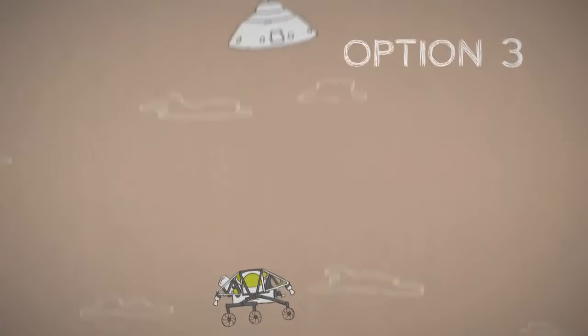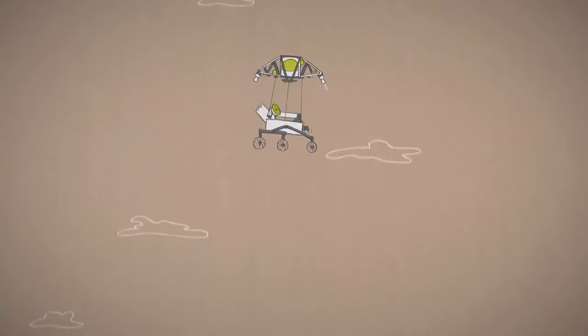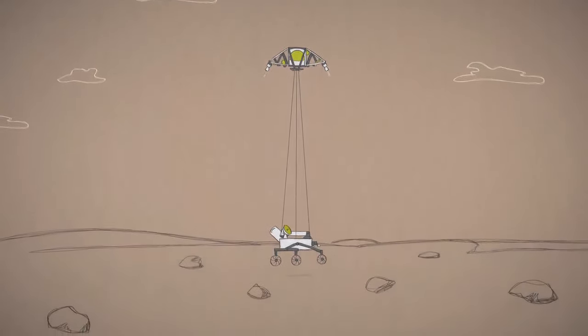Or with a large heavy rover, use a big jet pack to slow down to under 2 miles an hour. Then gently lower it on cables to land on its wheels.